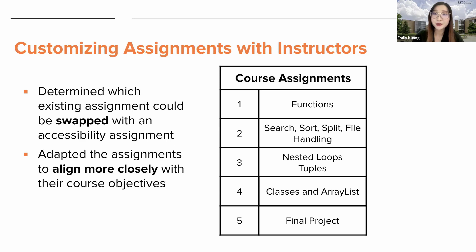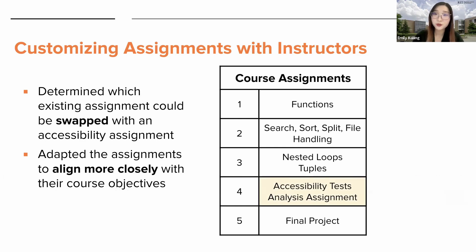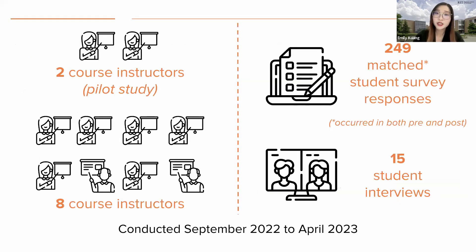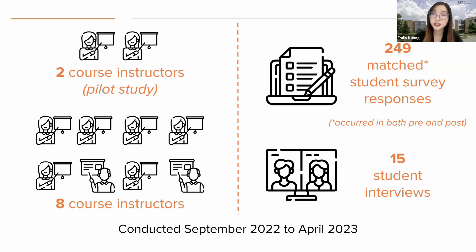During the onboarding and meeting with instructors, we looked at existing assignments and recommended which one could be removed and replaced with one that we developed. We also adapted the assignments to align more closely with their course objectives. Adjustments included adding an activity to make a client program, removing an activity, and adding unit tests for easier grading. Between September 2022 and April 2023, we ran the empirical study with eight course instructors, with an additional two who had previously participated in our pilot study. We received a total of 249 matched student survey responses and also conducted 15 interviews with students.